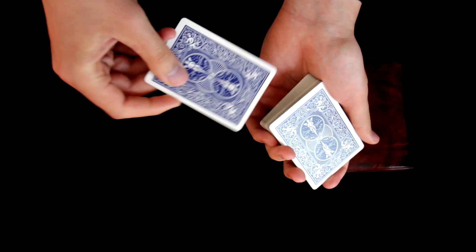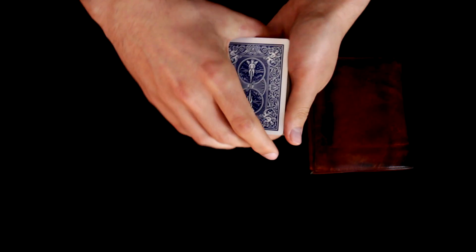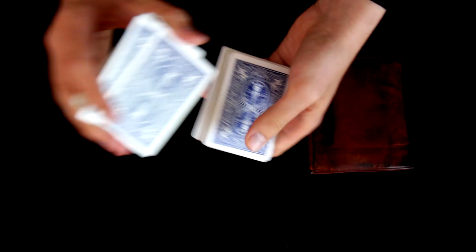Now we will take the signed card and return it somewhere inside the packet like this, and we will simply cut the deck to make sure it is lost. Furthermore, we will shuffle the deck like this.